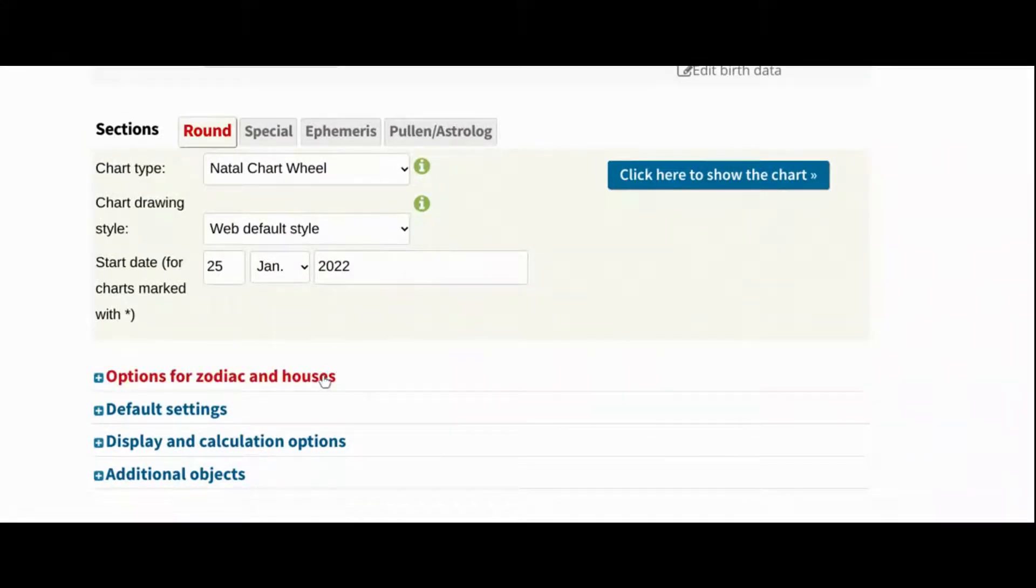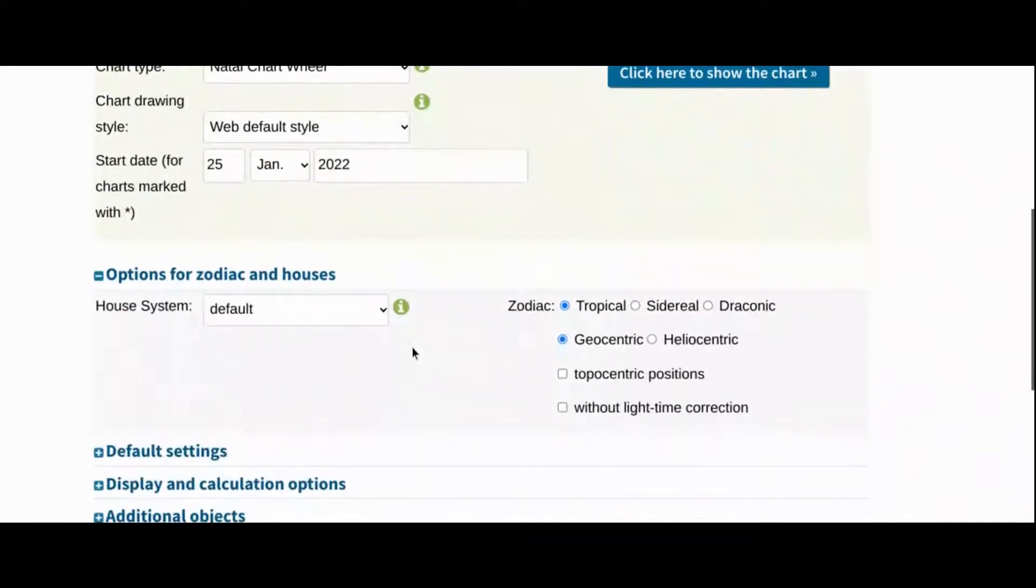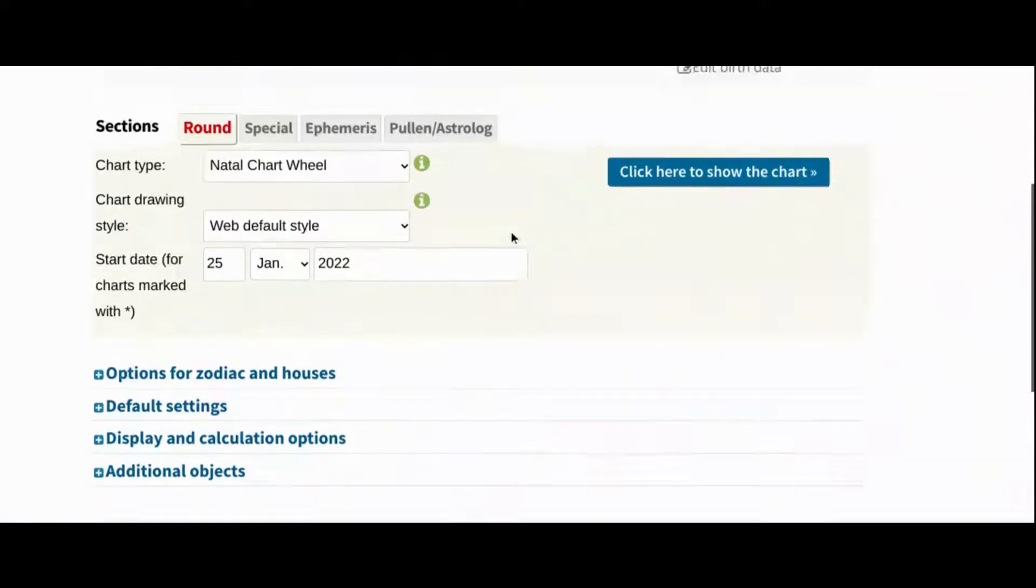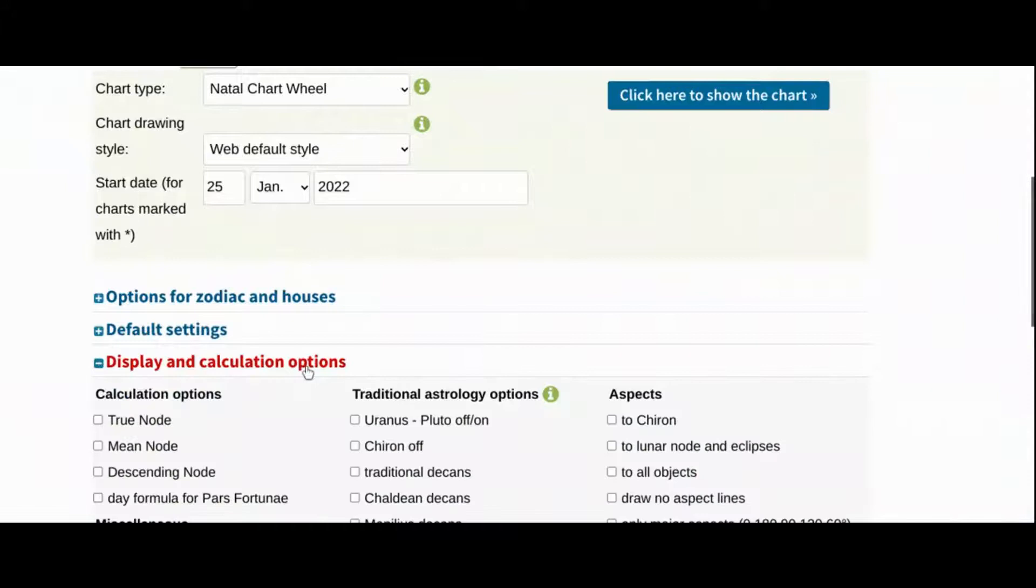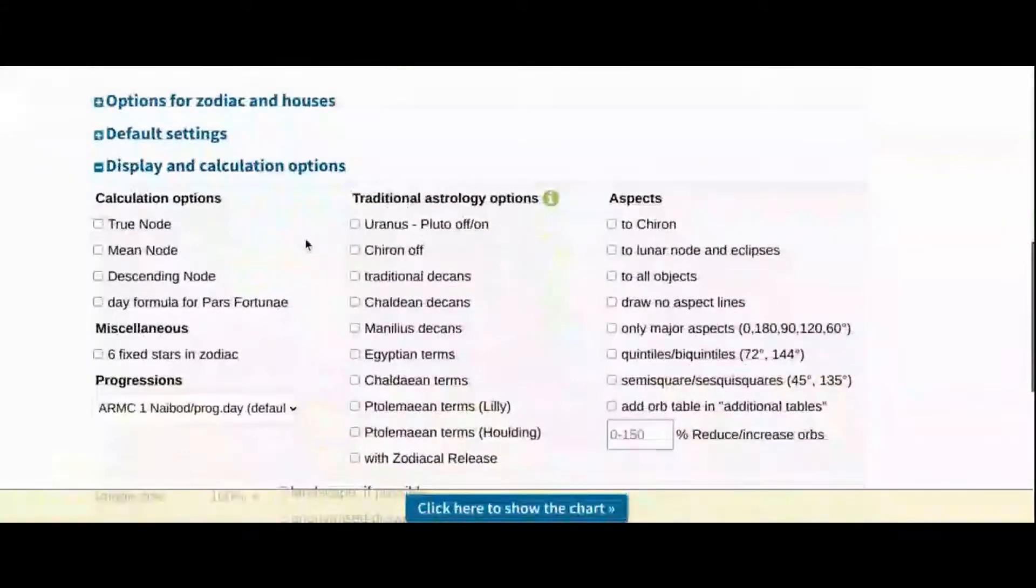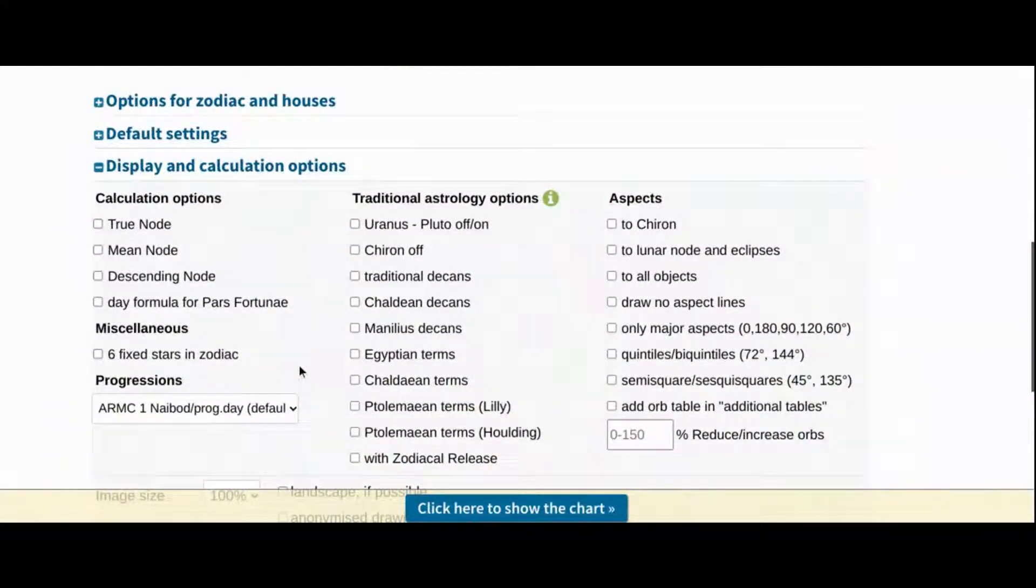In Options for Zodiac and Houses, you can change the zodiac and house system used. The default for astro.com is the Tropical zodiac and Placidus house system. I usually encourage you to play around with that when you get further along. If you do that now when you're just starting, it's probably just going to confuse you. In Display and Calculations Options, you can add a few more things and change calculations for some things like progressions, but again this is not for beginners, so this isn't something you need to worry about now.